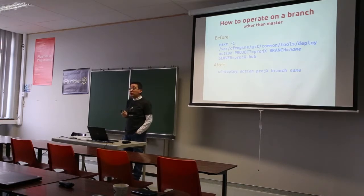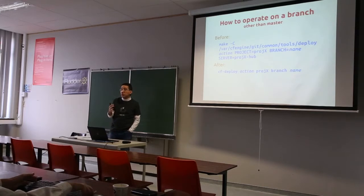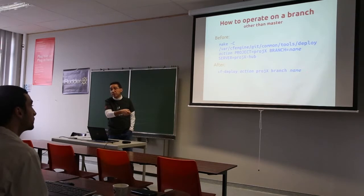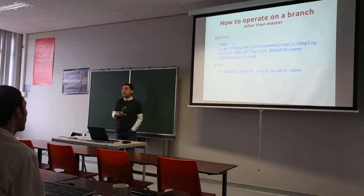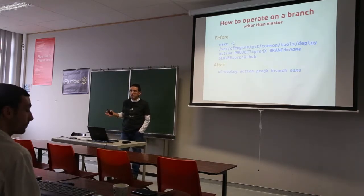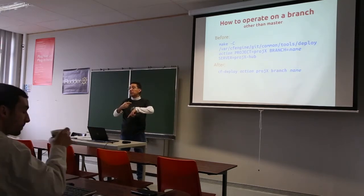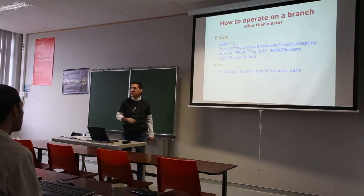If you want to operate on a branch rather than master — because all these commands default to master branch — you just add another keyword, branch, and specify the name. So: action, project name, branch, branch name. And since it's not strictly a branch name when using git, you can also use a commit ID or a tag, and it still works. So you can, for example, roll back a deployment by specifying the tag if you put one — otherwise look for the commit ID.